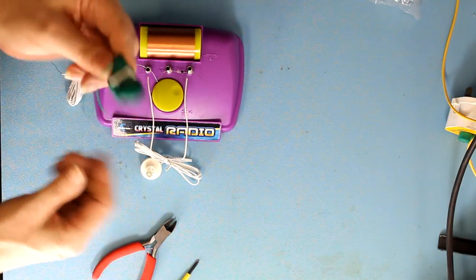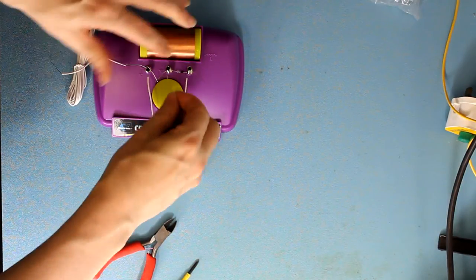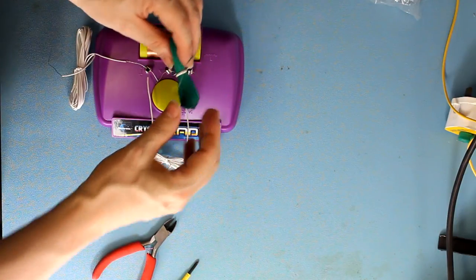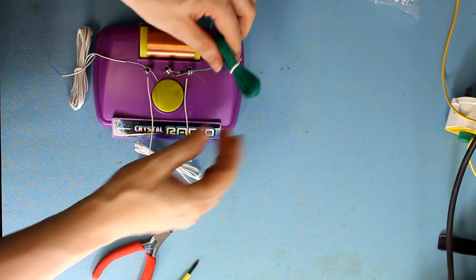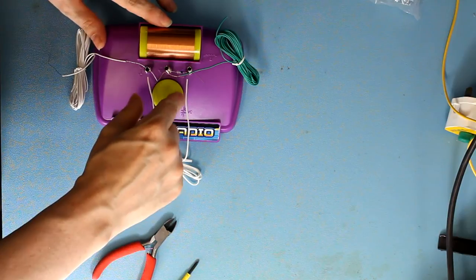And then you have this antenna which again you plug into the antenna tab. And then you would take it out, hold it up as high as you possibly can or run it as straight as you can. And then you tune using this dial here.